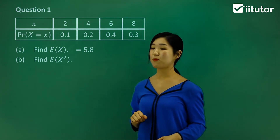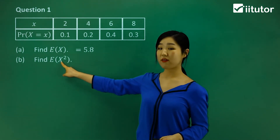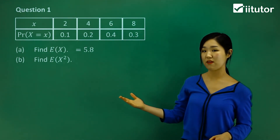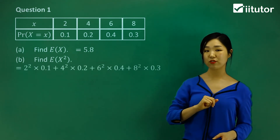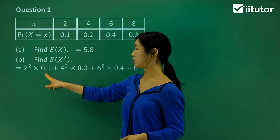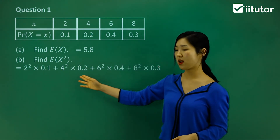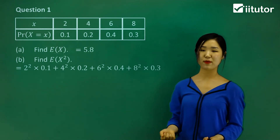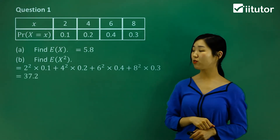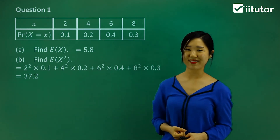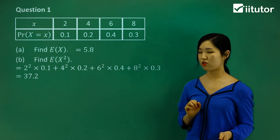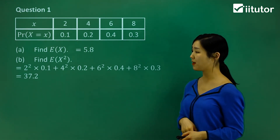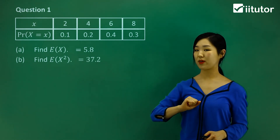Part B is asking us to find the expected value of X squared. So I'm going to square each of the variables and then find the expected value using the same procedure as part A. I square the 2 and multiply by the probability, square the 4 and multiply by the probability, and do the same for 6 and 8. Adding it all together gives a value of 37.2. Be very careful you plug in each number correctly.